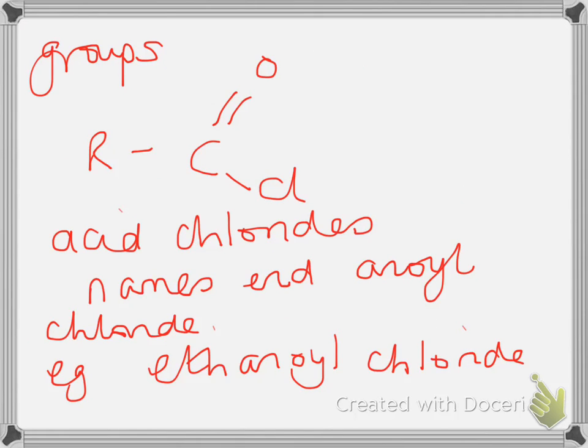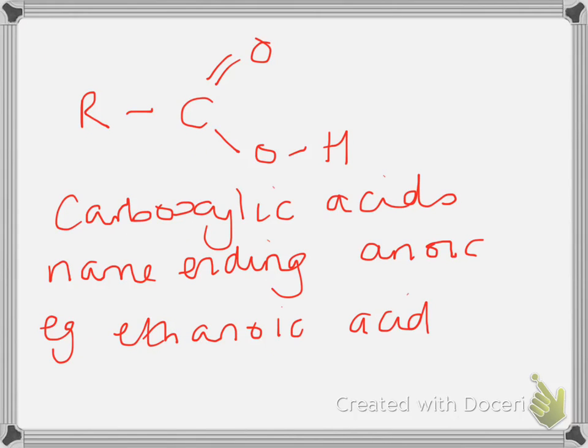So the first group we're looking at is the acid chloride, which has the carbonyl group next to the carbon chlorine group. These ending names are anoyl chloride, so for example with two carbons it would be ethanoyl chloride. Next we have a look at carboxylic acids, again the ending for those is anoic acid, so you have ethanoic acid, propanoic acid, etc.